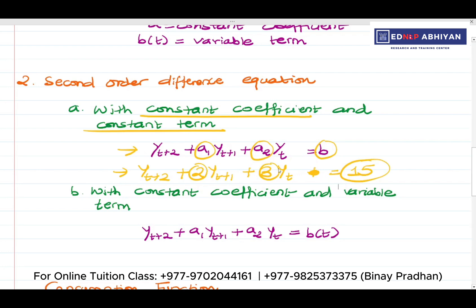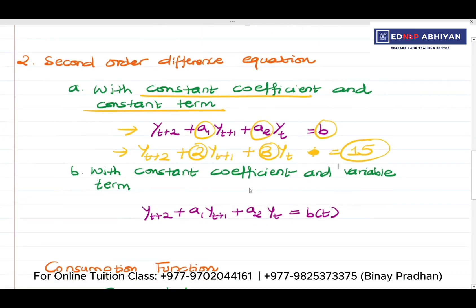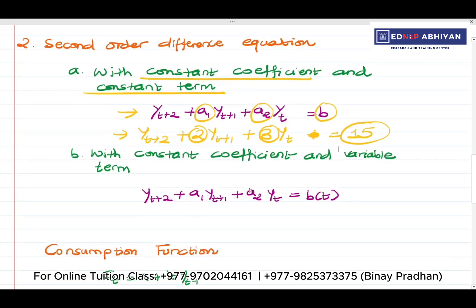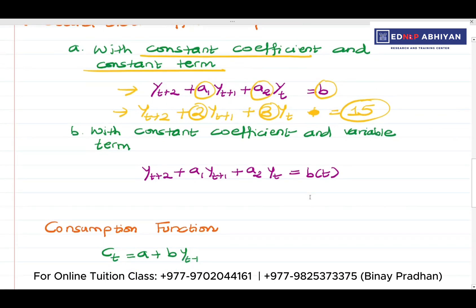This is the type of equation: second order difference equation with constant coefficient and constant term. We also have the type with constant coefficient and where b is a function of t — that gives us a variable term.